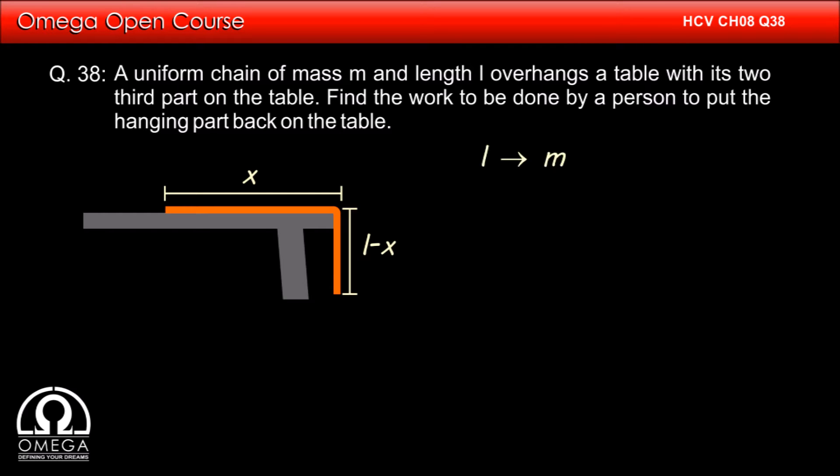Since the mass of length L of chain is m, mass of the hanging part whose length is L minus x is m by L. The force required to move the chain will be equal to the weight of the hanging part, i.e., m by L times L minus x times g.